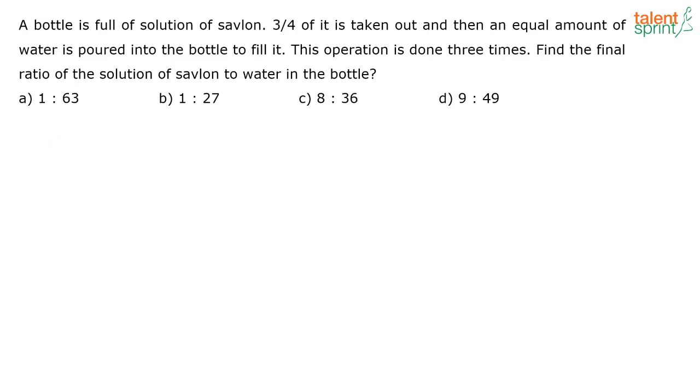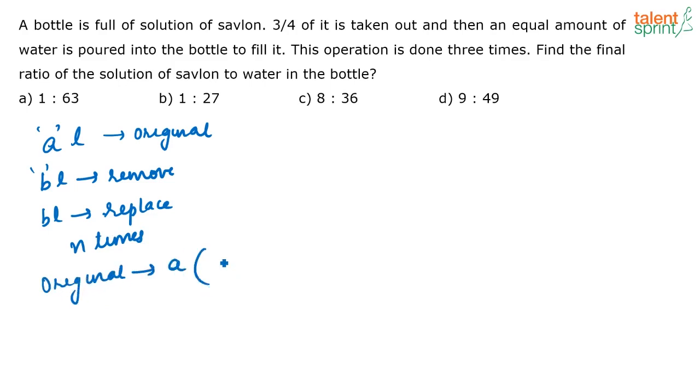Now the formula is like this. If you have A liters of an original liquid in a container, and you are removing B liters of this original liquid from the container and replacing it with another liquid, and you are doing this N times, then the amount of original liquid that is remaining in the container is given by A times (1 minus B/A) to the power of N.